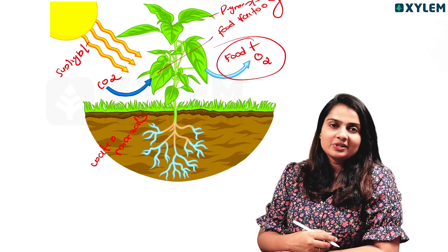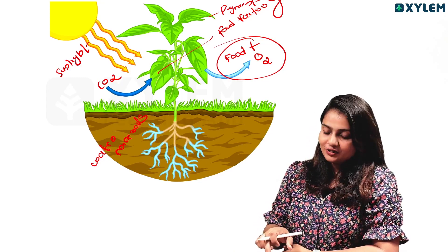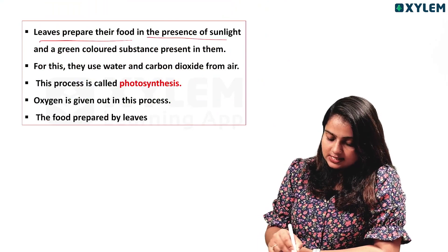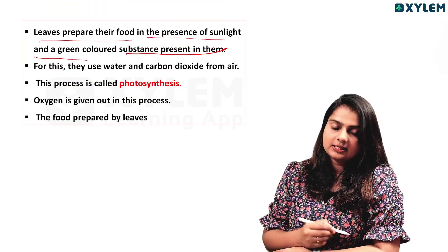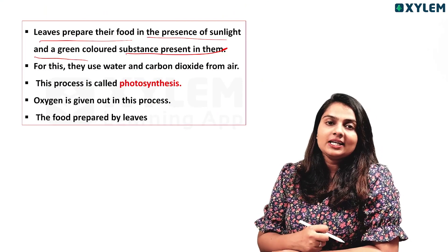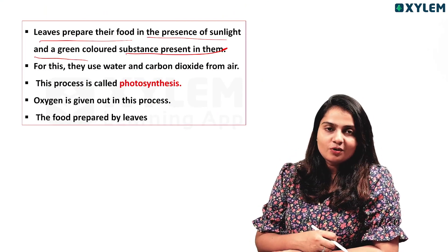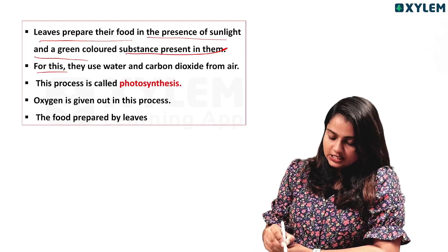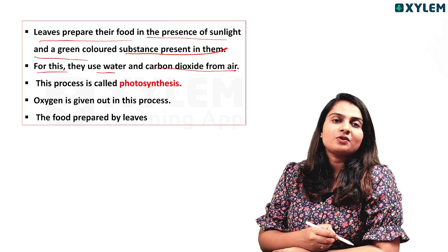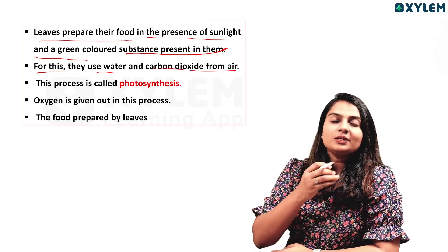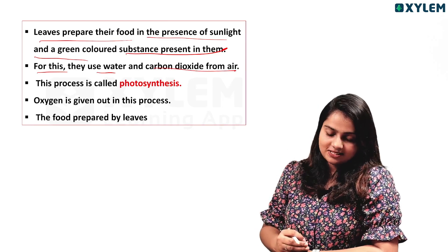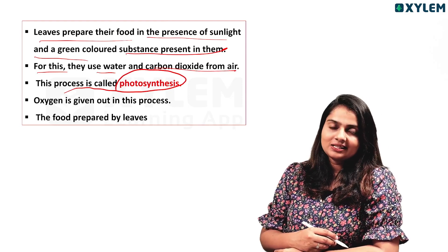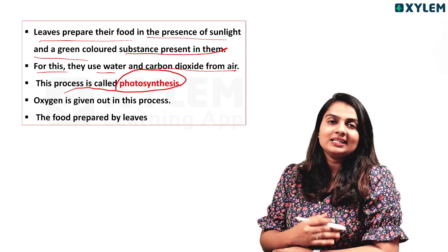This process is called photosynthesis. Plants prepare their food in the presence of sunlight using the green-colored substance chlorophyll present in them. For this, they use water and carbon dioxide from air. Carbon dioxide is absorbed from the air, making photosynthesis simple to understand.